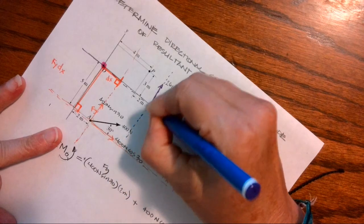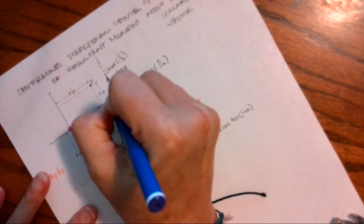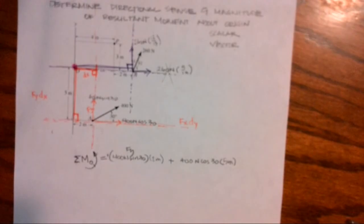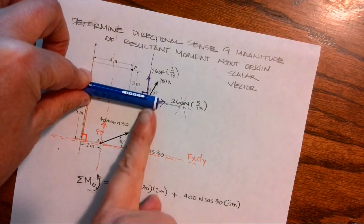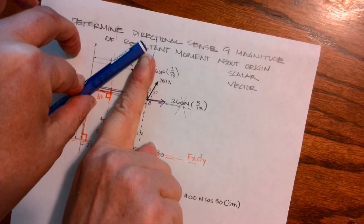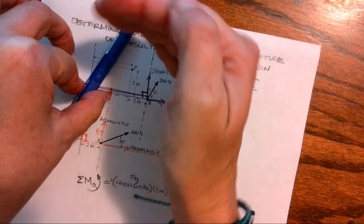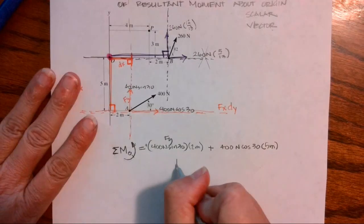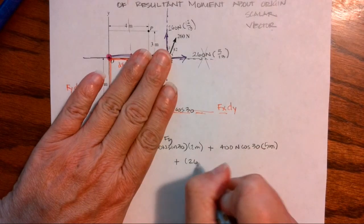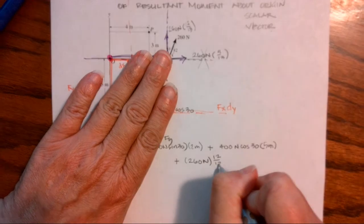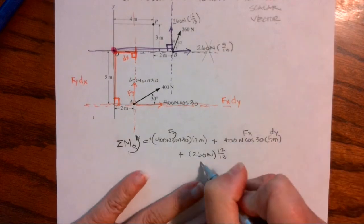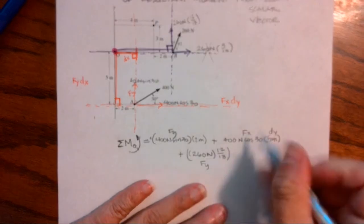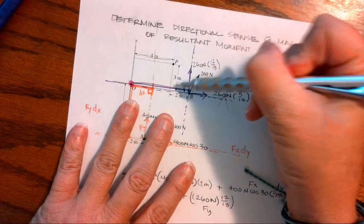So now we need to go to the Y component. And again, the Y component runs in the Y direction. And I need to find a perpendicular distance to that vector. So if I put my clock handle, attach it at the origin, push up along the vector line, I can see that rotation indeed occurs. And it's occurring counterclockwise. So I have a positive 260 Newtons times 12 over 13. So here I had FX, DY, here I have FY. There's my force. Now I need DX: one, two, three, four, five, six.